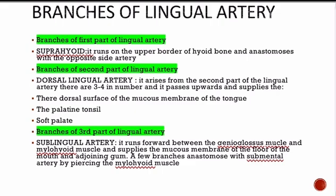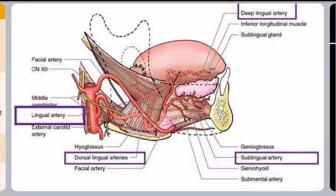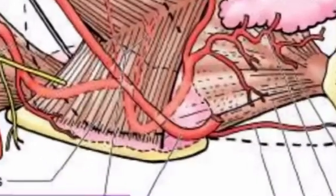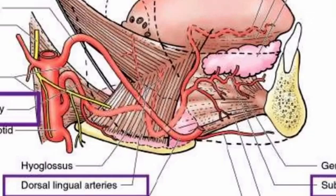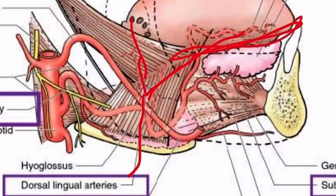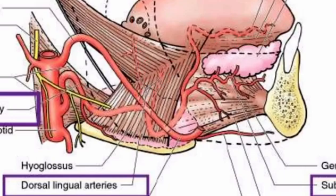The second part gives the dorsal lingual artery. It arises from the second part of the lingual artery, there are three to four in number, and they pass upwards supplying three things: the dorsal surface of the tongue, the palatine tonsil, and the soft palate. In the diagram you can see these three to four dorsal lingual arteries passing upwards.